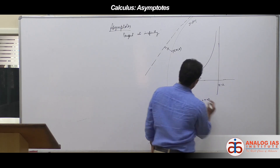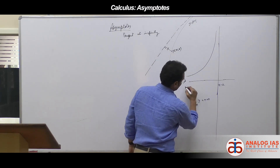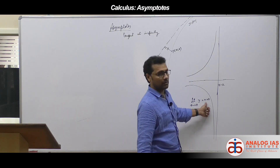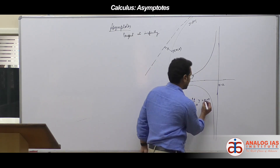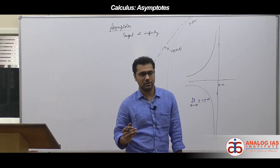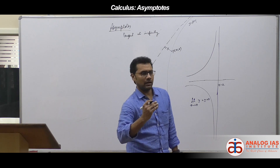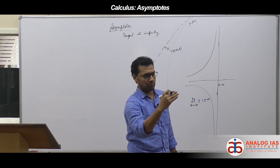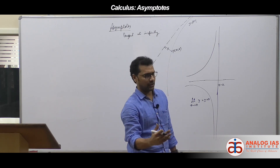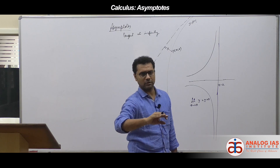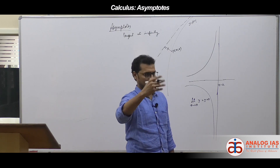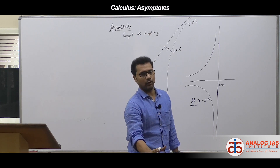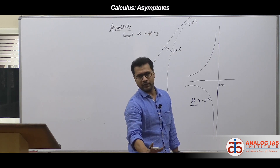Suppose the curve goes to infinity on the other side — that would be minus infinity. So as limit x tends to a, y might go to plus infinity or minus infinity. Any one case, or both cases, might be possible. In any of these cases, we call x = a as a vertical asymptote.